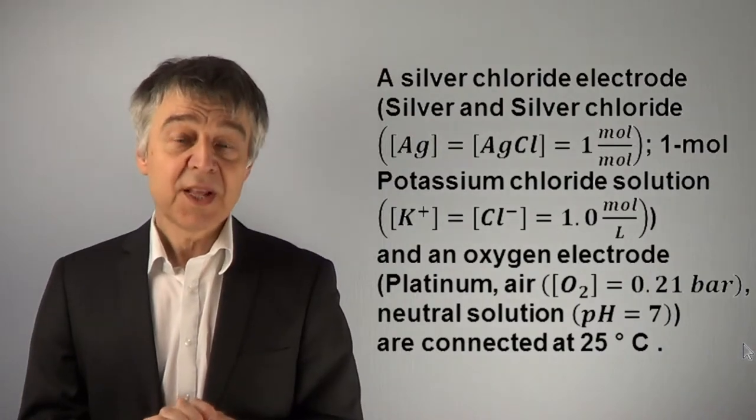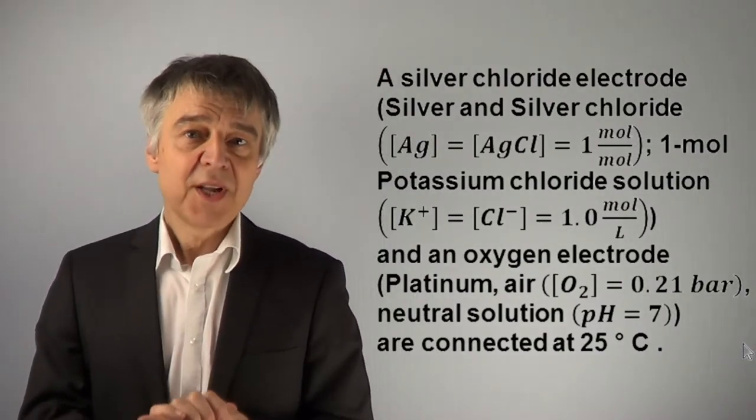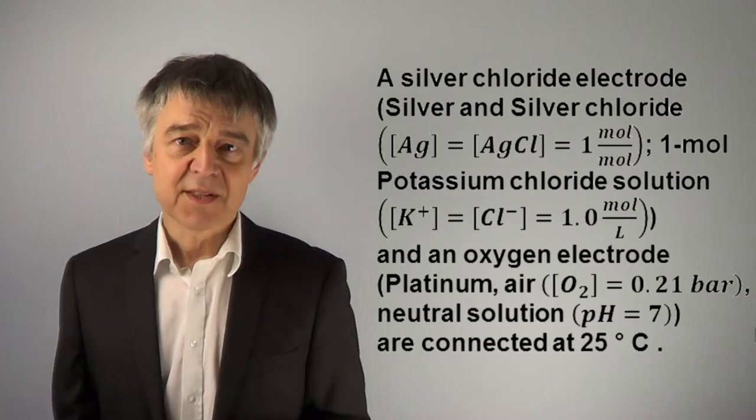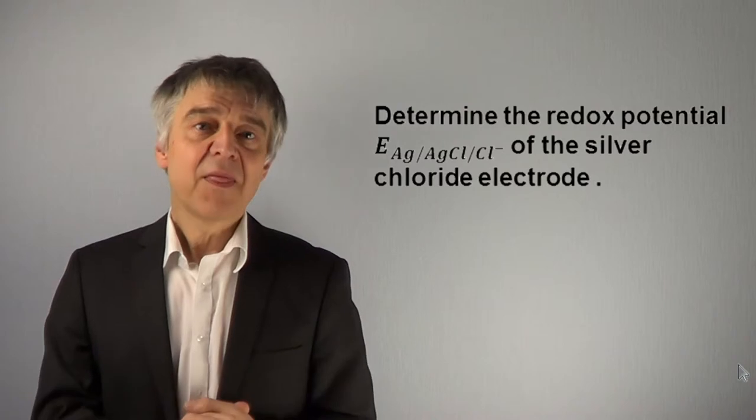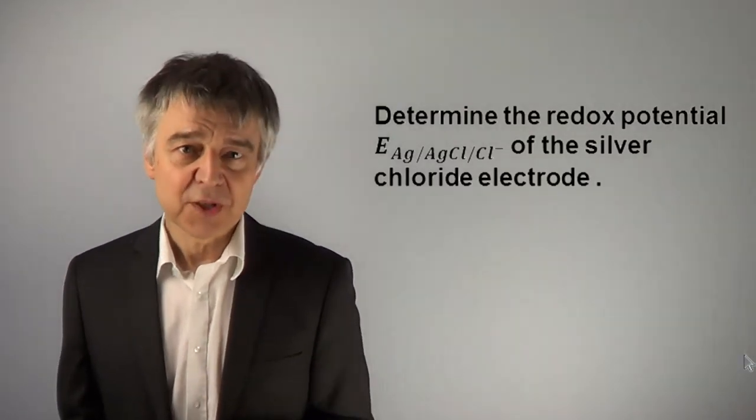A silver chloride electrode and an oxygen electrode are connected at 25 degrees Celsius. Determine the redox potential of the silver chloride electrode and the redox potential of the oxygen electrode.